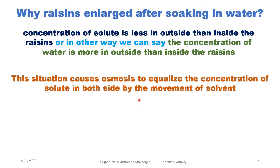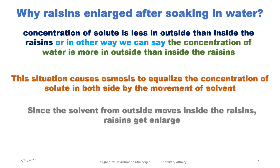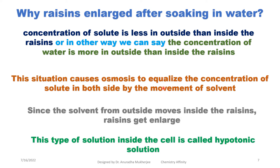As we already discussed, in the process of osmosis, if the concentration of solvent is more on one side, solvent will pass through to the other side where the concentration of solvent is less. So the same thing is happening here — inside the resin the concentration of solvent is less, or we can say the concentration of solute is more. Since the solvent concentration is more on the outside, water is moving from outside to inside, and that is the reason the resins get enlarged. This type of solution inside the resin is called the hypotonic solution. Hypotonic solution means when inside the cell the concentration of solute is more than outside, it is called a hypotonic solution.